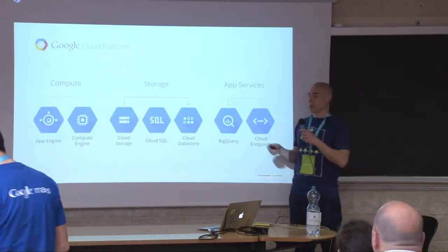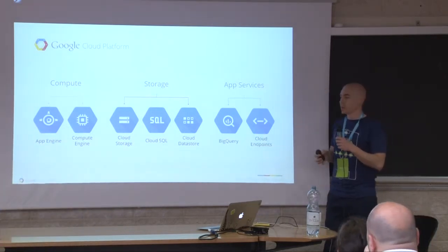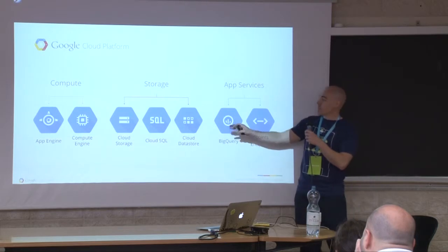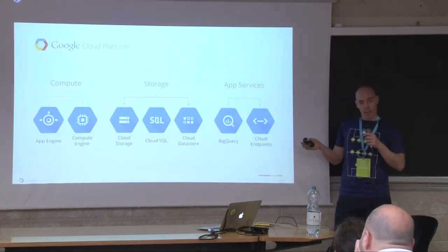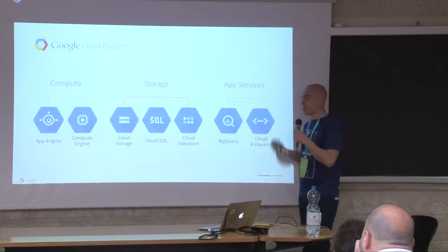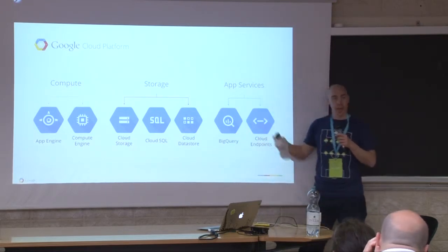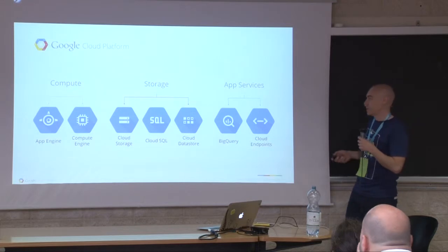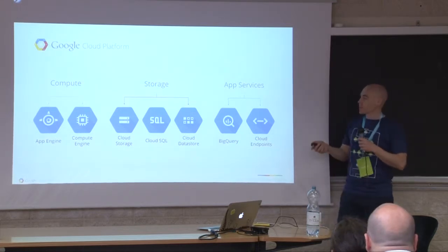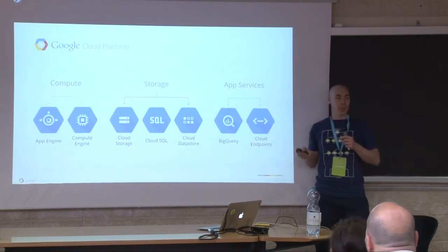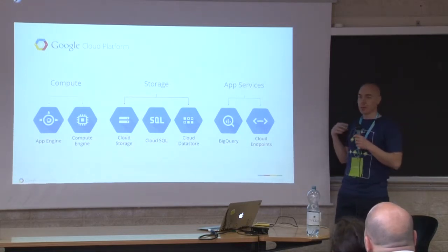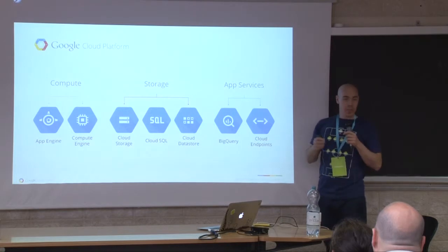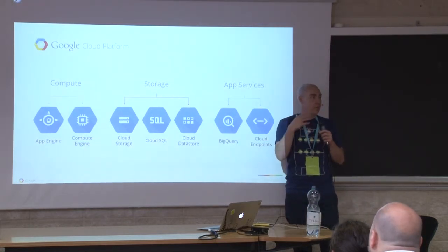Super brief introduction: Google Cloud Platform is Google's vision of cloud. It's composed of different pieces you can use together, combine with third-party services, or include inside third-party services — it's very open. There are three main parts: the compute part — App Engine, which is Platform as a Service where you only deploy your code and Google takes care of the rest — and Compute Engine, which is virtual machines you can use to create your own software stack.